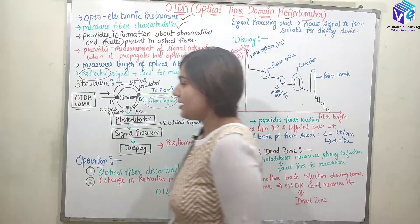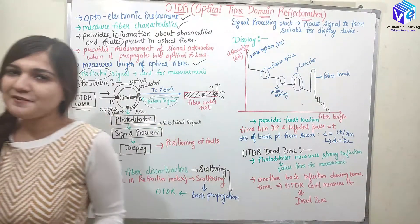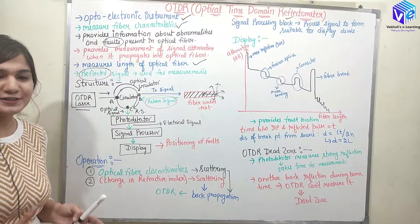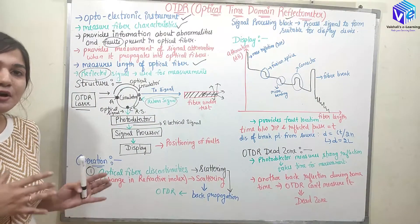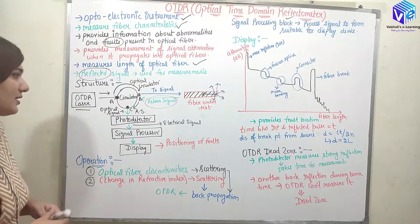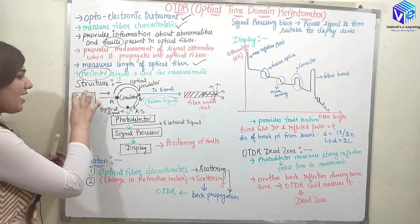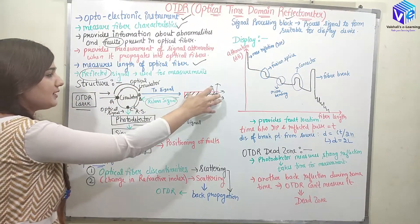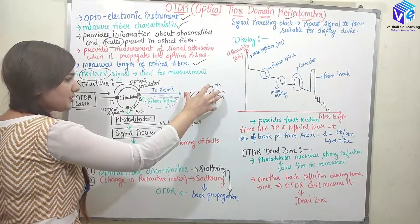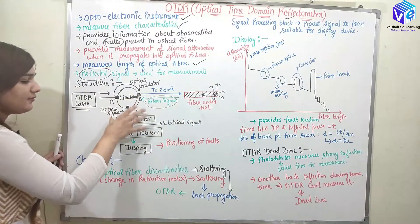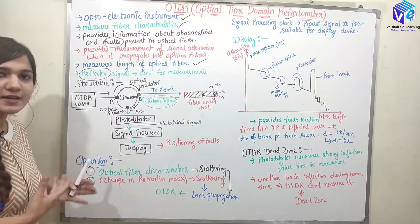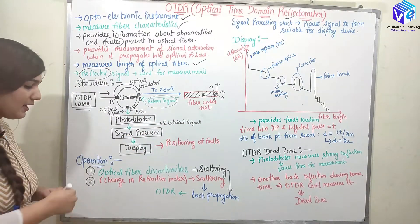The structure of OTDR consists of: an OTDR laser, a circulator, the optical fiber under test, a photo detector, a signal processor, and a display.